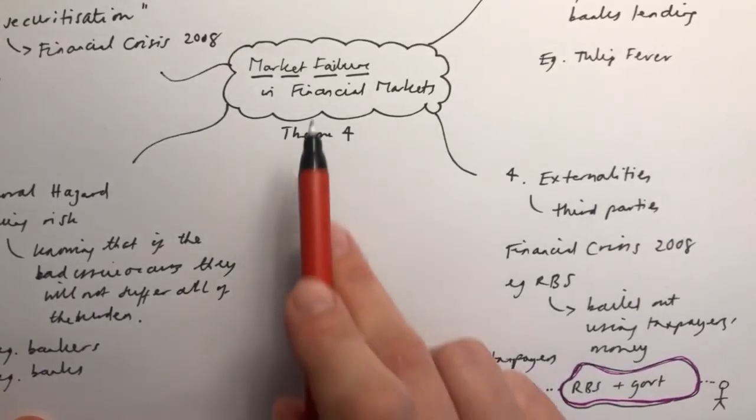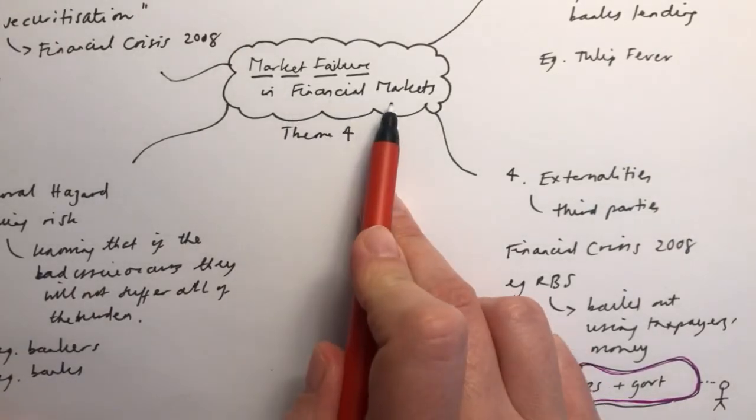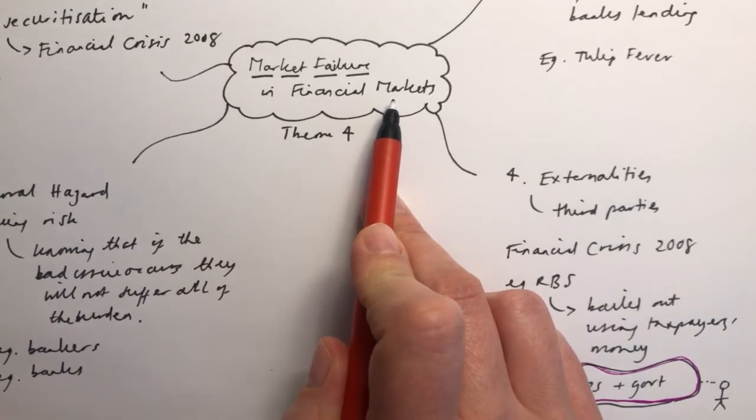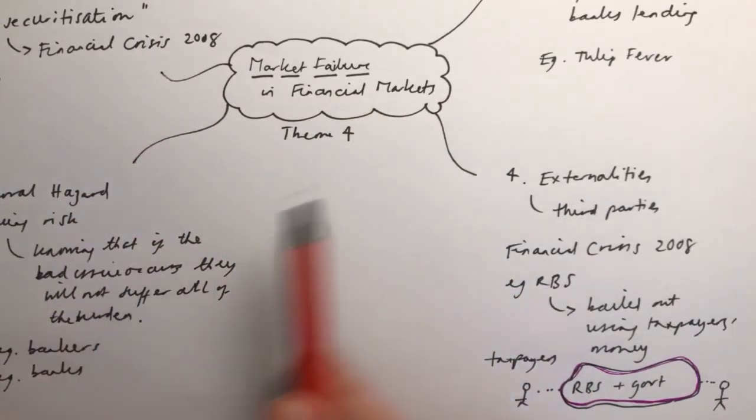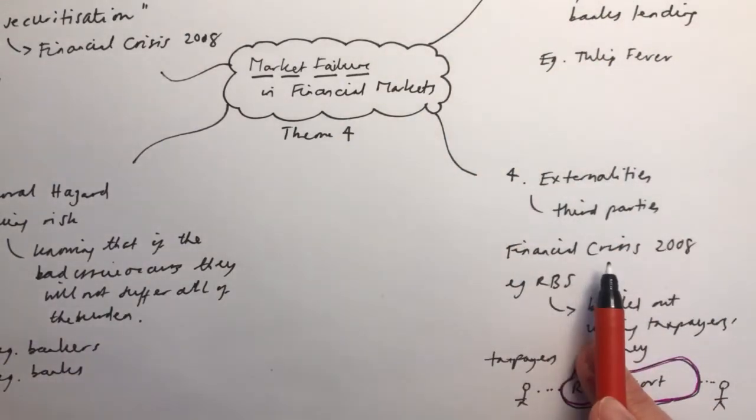We're going to look at one last type of market failure that you can have in financial markets. There are four main ones which we've already talked about: asymmetric information, moral hazard, speculation and market bubbles, and externalities, and there are videos on each of those four.